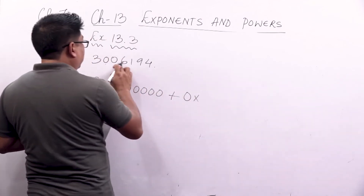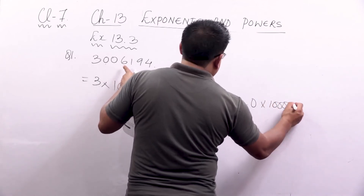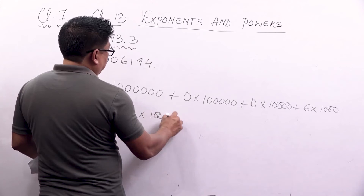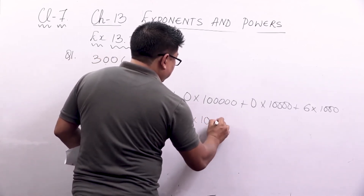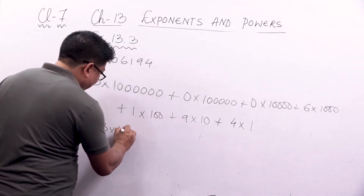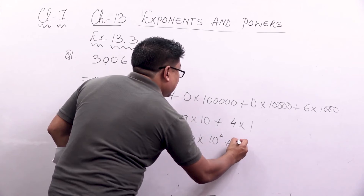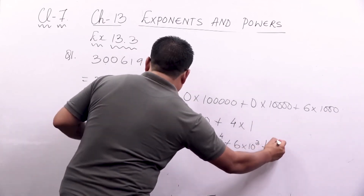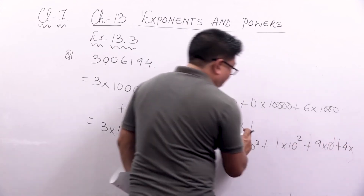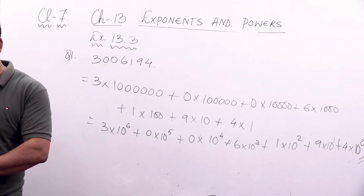Continuing: plus 0 into 10000, plus 6 into 1000, plus 1 into 100, plus 9 into 10, plus 4 into 1. Or using powers of 10: 3 into 10 to the power 6, plus 0 into 10 to the power 5, plus 0 into 10 to the power 4, plus 6 into 10 to the power 3, plus 1 into 10 to the power 2, plus 9 into 10 to the power 1, plus 4 into 10 to the power 0.